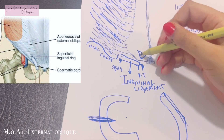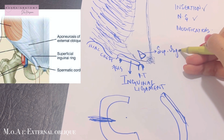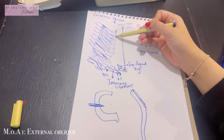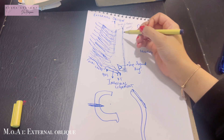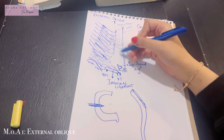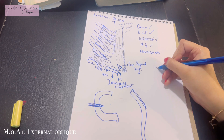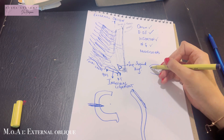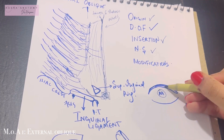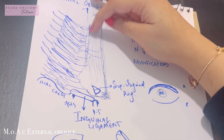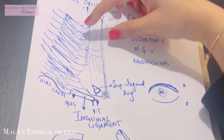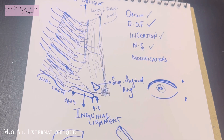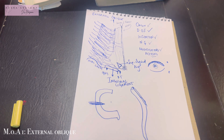Just above the pubic crest, the external oblique presents a triangular aperture known as the superficial inguinal ring. Another important feature is that between the linea semilunaris and the linea alba, the aponeurosis of the external oblique forms the anterior wall of the rectus sheath throughout its entire extent.